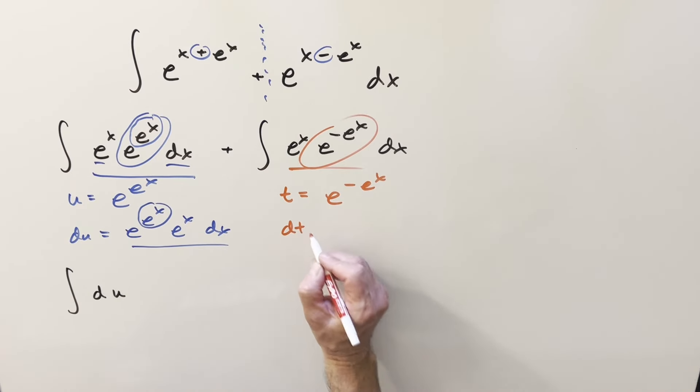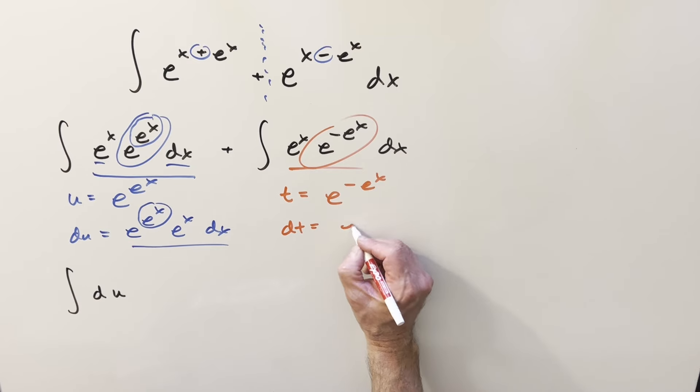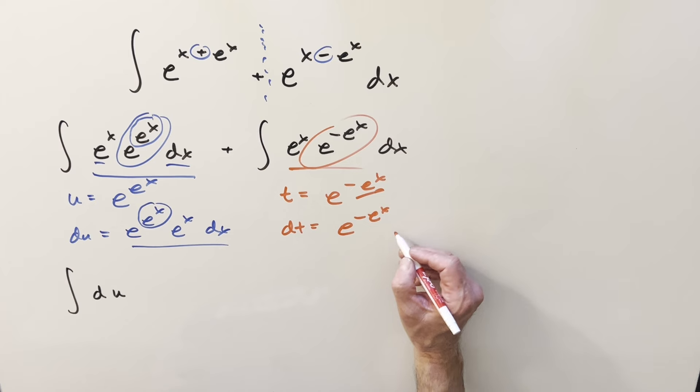And then take a derivative, get our dt value, we get the whole thing back, e to the minus e to the x. Chain rule again on that is going to be minus e to the x. Let's bring the minus out front, dx.